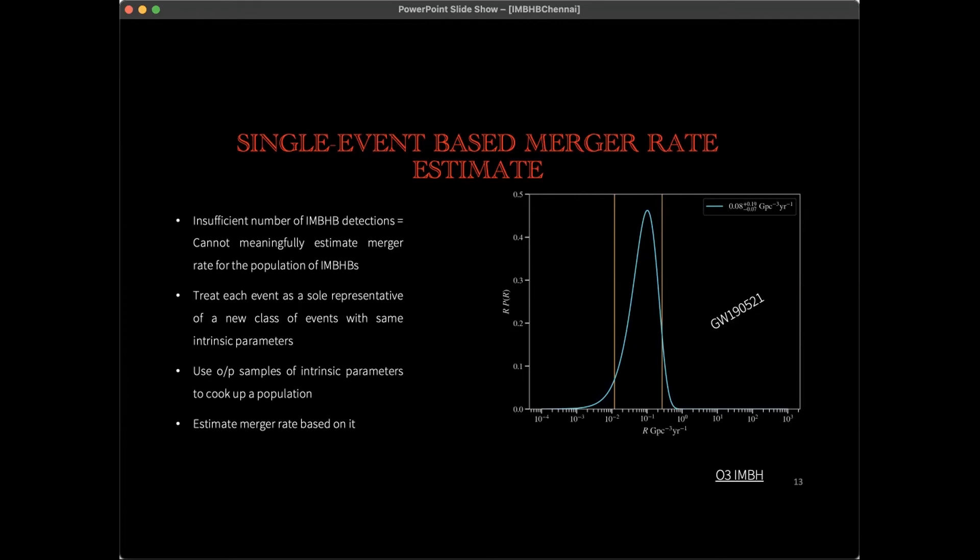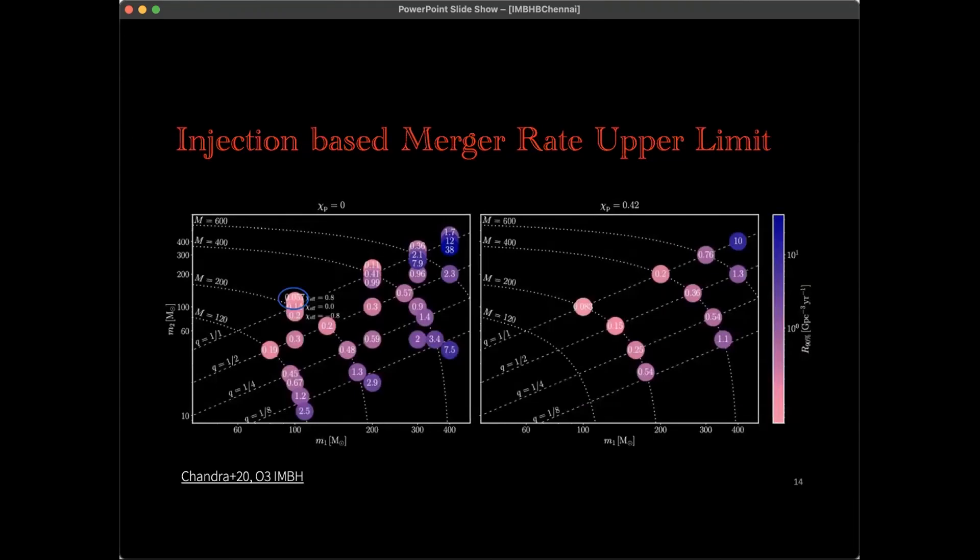Then we draw a population distribution out of it by varying the set of extrinsic parameters. Based on the fractional recovery of these kinds of fake injections that we make onto the gravitational wave data, we estimate the merger rate. We found that the merger rate for GW190521-like figures is something like 0.08 mergers per gigaparsec cubed per year.